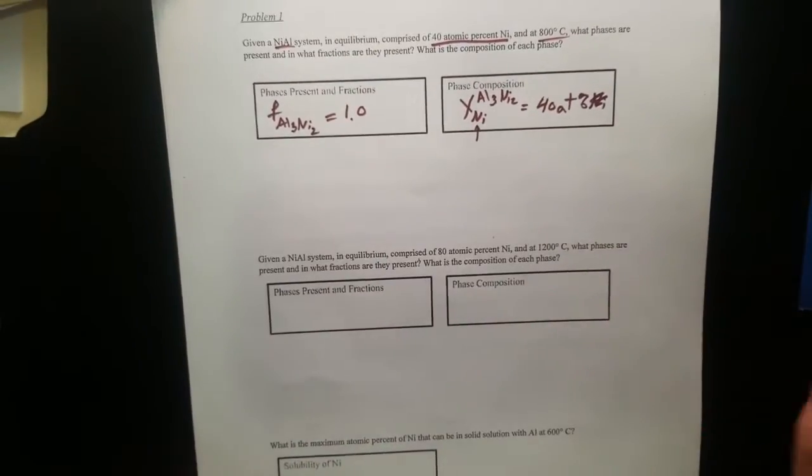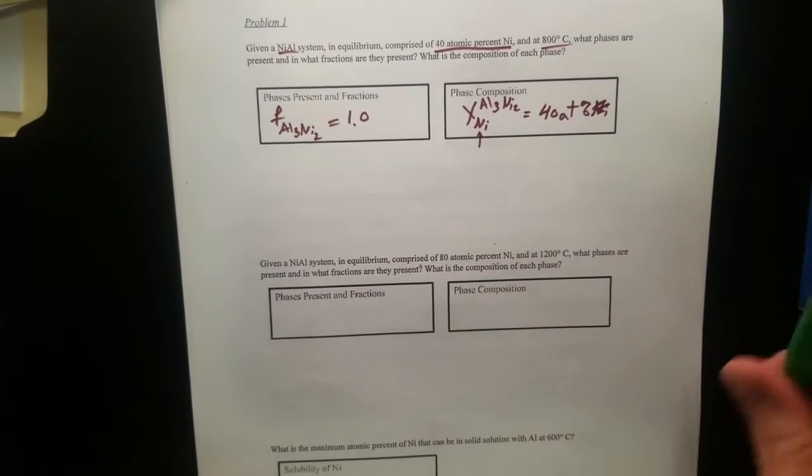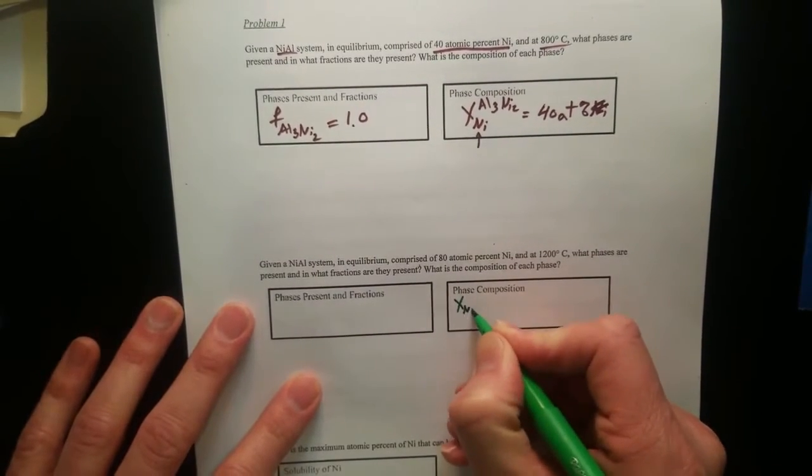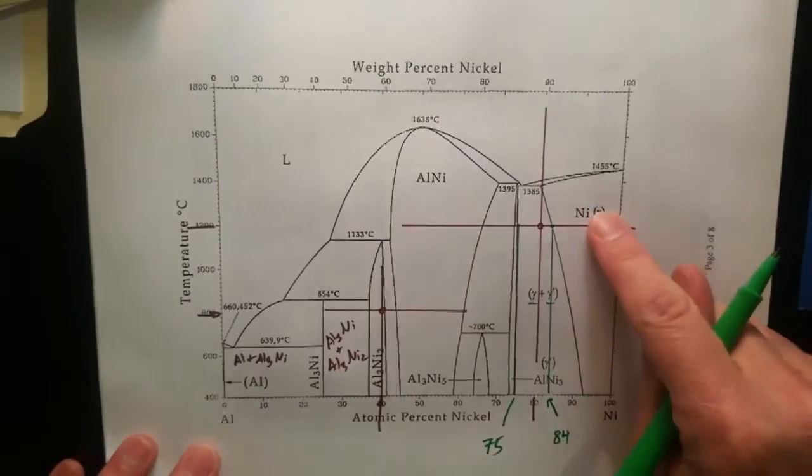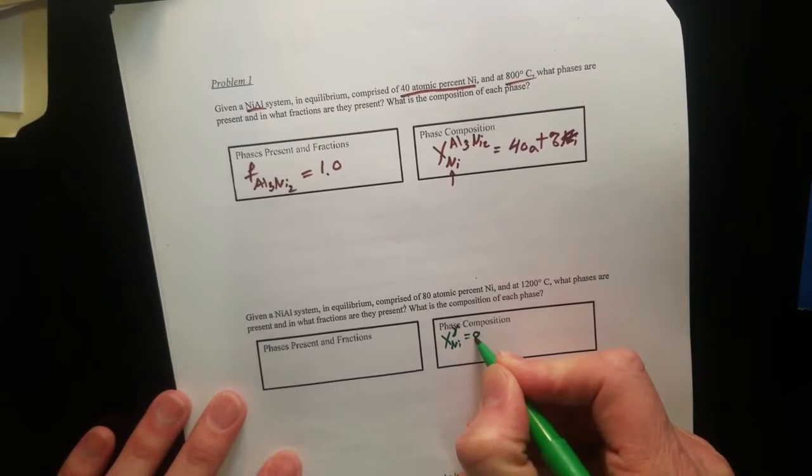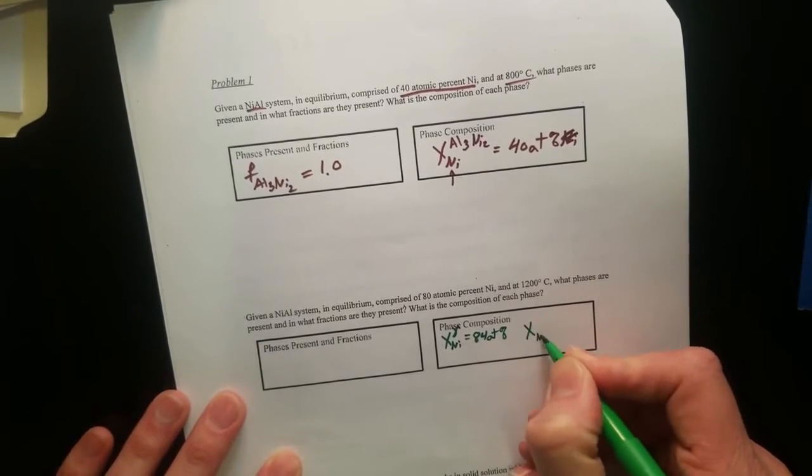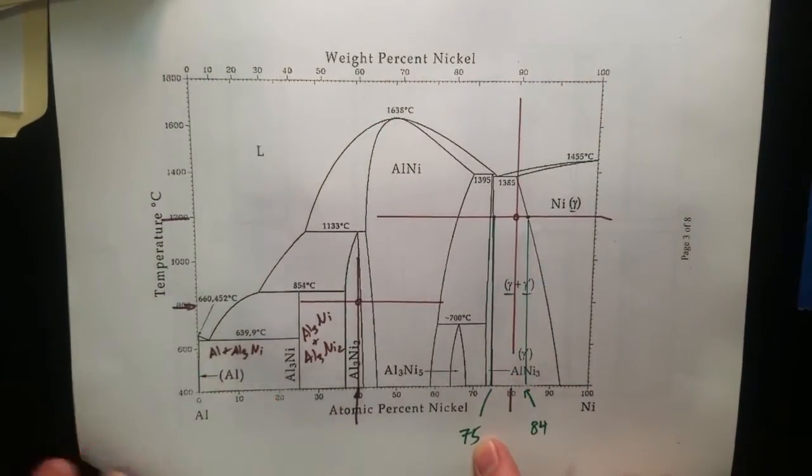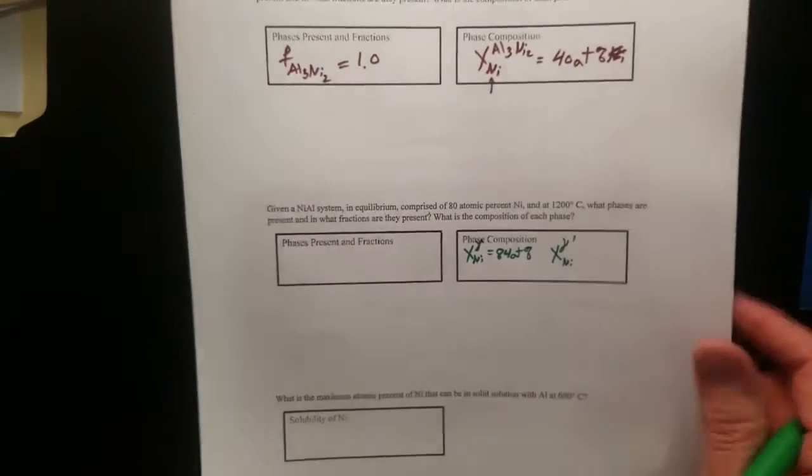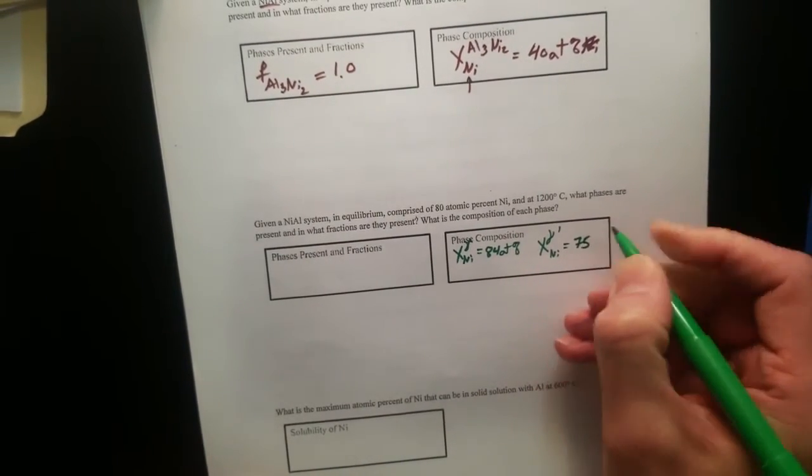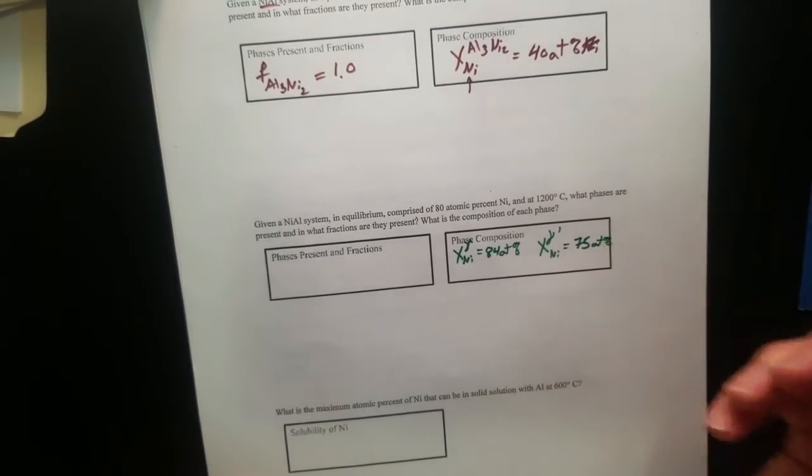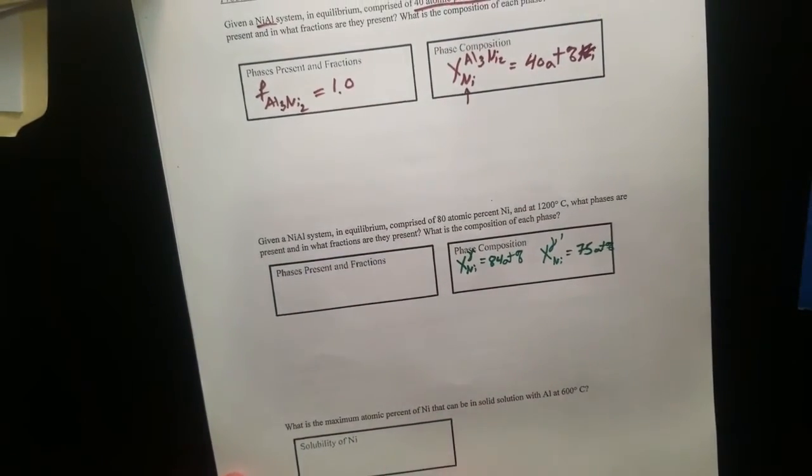So let's mark out the phase composition by looking at the solubility limits. So let's draw a vertical line down. That is around, let's call it around 75. And we'll draw a vertical line down here, and I'm going to call that around 84. So our phase compositions, X-NI of gamma is 84 atomic percent nickel.